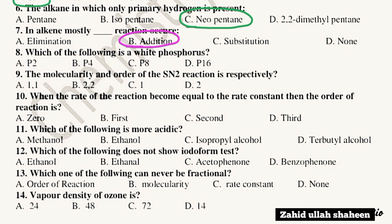Question 6: Which of the following is white phosphorus? The answer is option B.